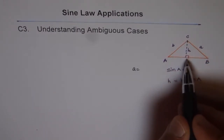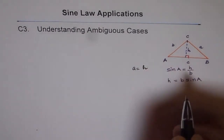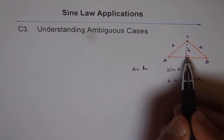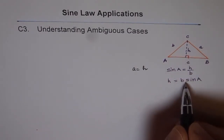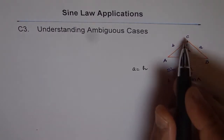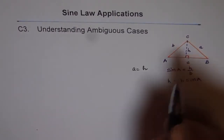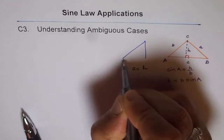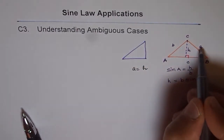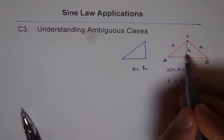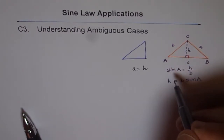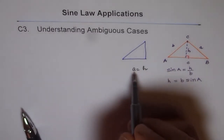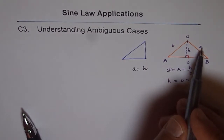If side a equals the height H of the triangle — that is, a equals B·sin(A) — then you will form a right angle triangle. So when a equals the height H, we get exactly one triangle, and it is a right triangle.